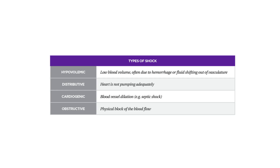The four types of shock are hypovolemic, distributive, cardiogenic, and obstructive. Hypovolemic shock occurs when there is low blood volume, often due to hemorrhage or fluid shifting out of the vasculature. Distributive shock occurs when the heart is not pumping adequately. Cardiogenic shock occurs when blood vessels are dilated, like in septic shock. Obstructive shock occurs when there is a physical blockage of the blood flow.